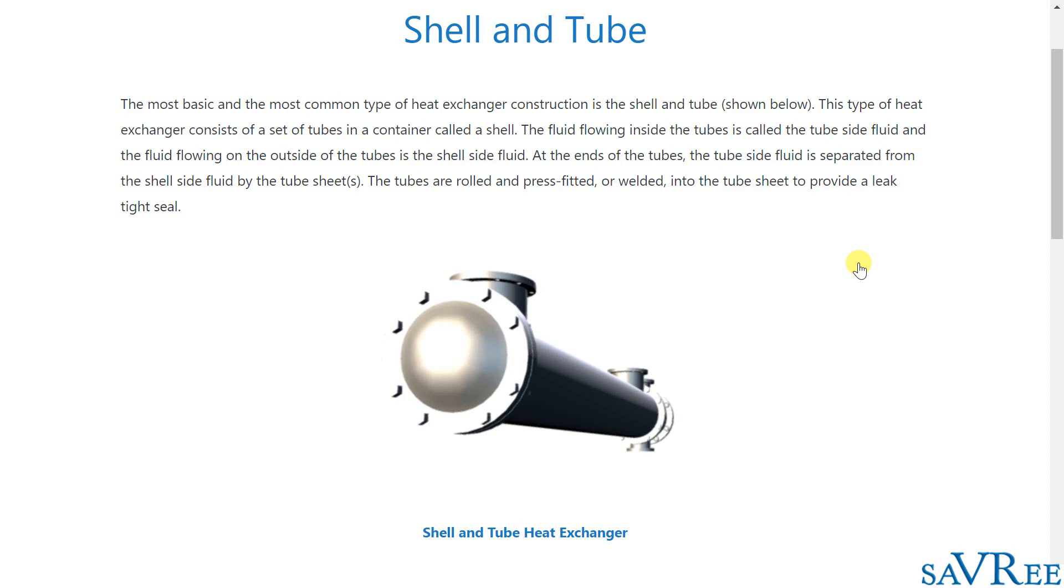So the shell and tube type heat exchanger is essentially a series of pipes that will pass through a heat exchanger and we'll have one medium flowing through the pipes and one medium flowing on the outside of the pipes. And we're going to have a look at an example in a moment.